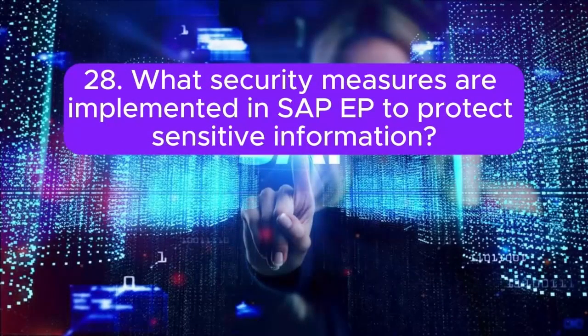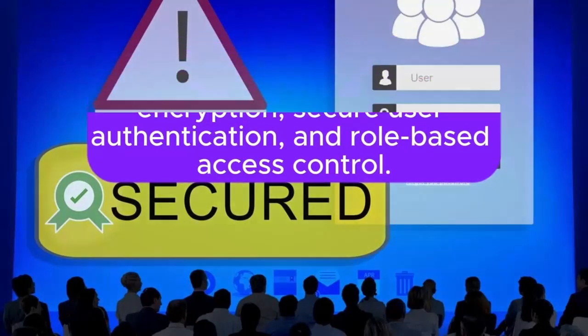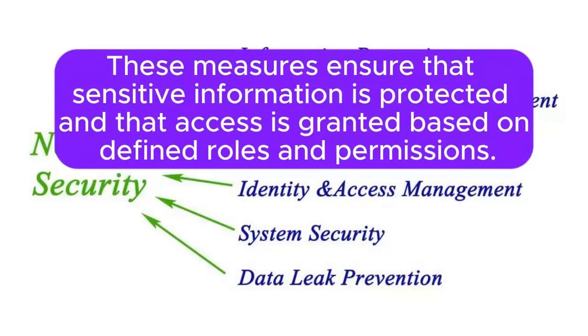Question 28: What security measures are implemented in SAP EP to protect sensitive information? SAP EP implements security measures such as SSL encryption, secure user authentication, and role-based access control. These measures ensure that sensitive information is protected, and that access is granted based on defined roles and permissions.